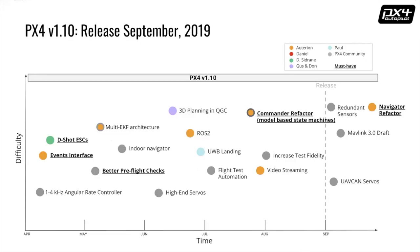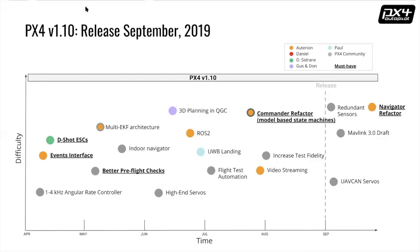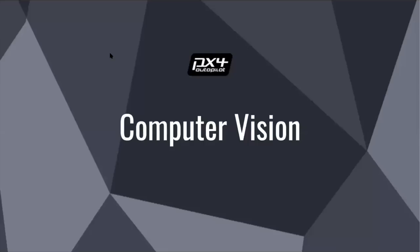For the September release we have larger work packages: supporting DSHOT ESCs with feedback and logging from speed controllers, a rate controller for multicopters running at least a kilohertz or as fast as you want, and indoor navigation support. Back to VIO and other things we'll touch on later — you'll be able to do return to home, fly in a GPS-denied environment, plan missions, that kind of thing.